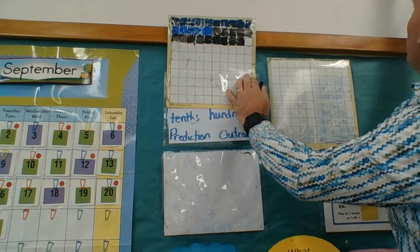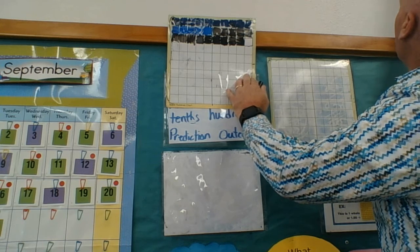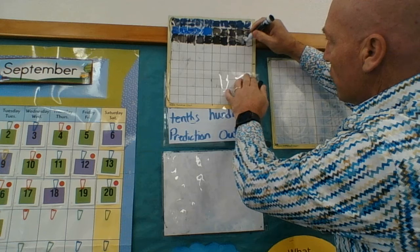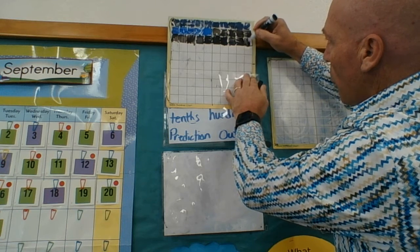And that 1 hundredth right here, this square right here, represents this square right here. I'm doing it a little bit differently today, so you get a difference. It's not the same old, same old.